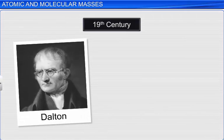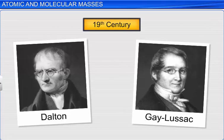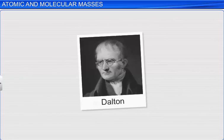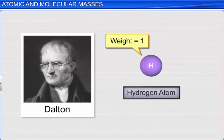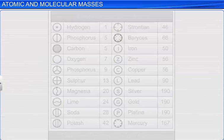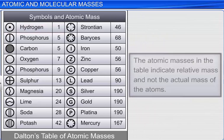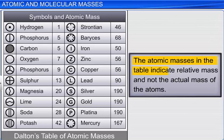In an attempt to find a solution to the problem in the 19th century, Dalton made some assumptions based on Gay-Lussac's findings. Based on Gay-Lussac's findings, Dalton assigned hydrogen a weight of 1. He used hydrogen as a standard for determining the atomic masses of other elements and published the first table of atomic masses. Note that the atomic masses in the table indicate relative mass and not the actual mass of the atoms, which means that the masses of elements is relative to the mass of hydrogen.